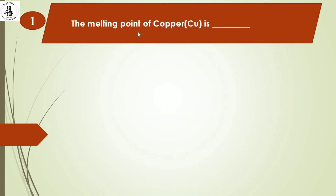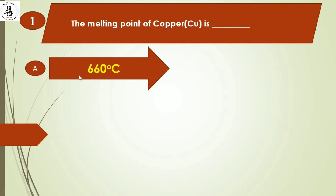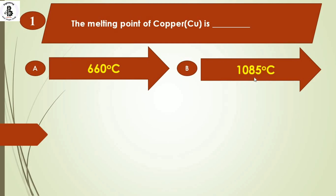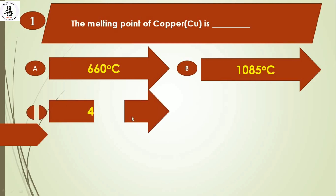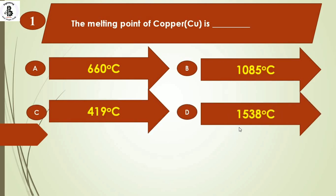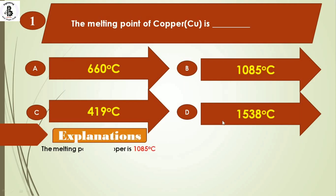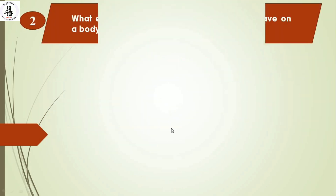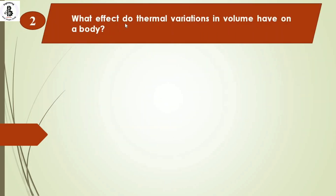The melting point of copper is: option A) 660°C, option B) 1085°C, option C) 419°C, and option D) 1538°C. The melting point of copper is around 1085°C, so the right answer is option B.